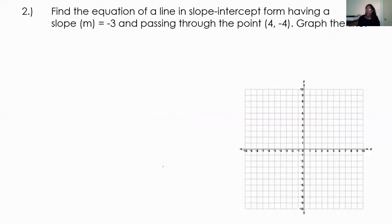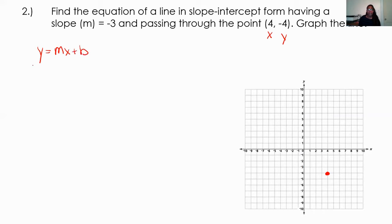For the next example, same situation. We're going to find the equation using a slope of negative 3, and it's passing through the point (4, negative 4). So here's my origin, going over 4 and then down 4. I'm looking for an equation of a line that's going to go through that point with a slope of negative 3. They gave me the M, and they also gave me my X and my Y. So if I use my formula, I'm going to replace Y with negative 4, M with negative 3, X with 4, and bring down my plus B.